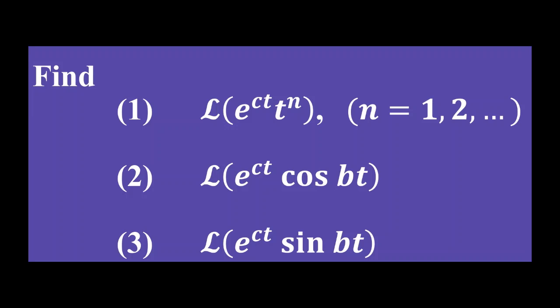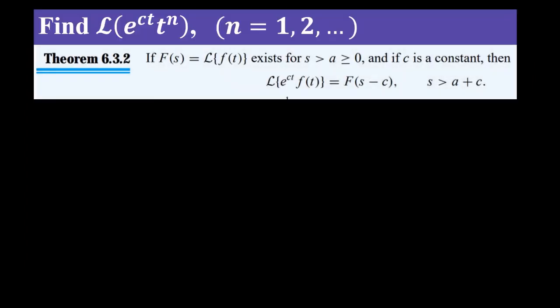For doing this problem, we will use this result: if F of s is equal to L of f of t exists, and if c is a constant, then L of e raised to ct times f of t equals F of s minus c. We already discussed this theorem.